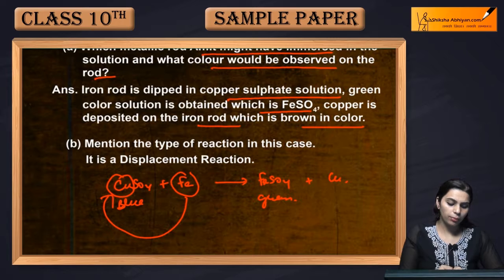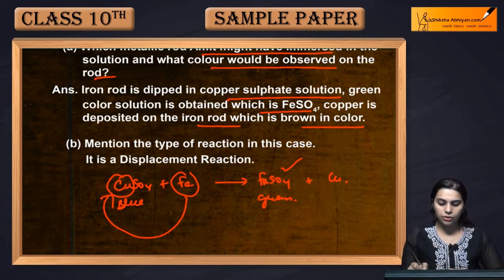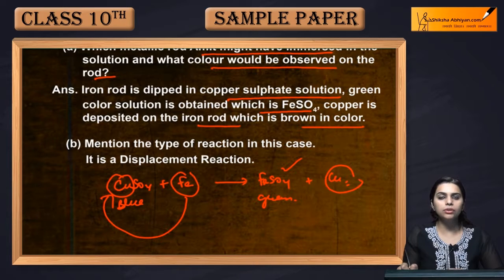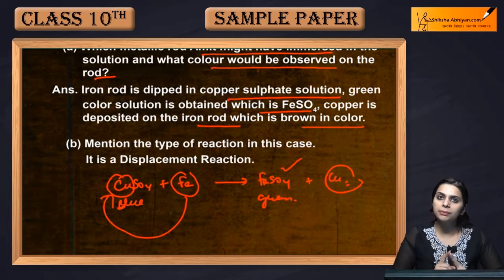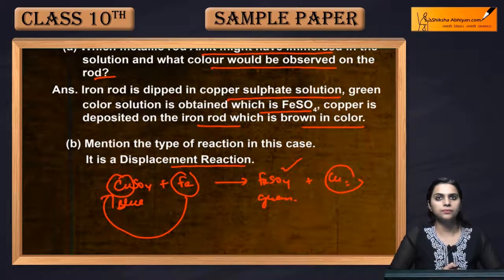Iron has displaced the copper, forming ferrous sulphate. The copper was deposited on the metal rod. So, what type of reaction is this? It is a displacement reaction.